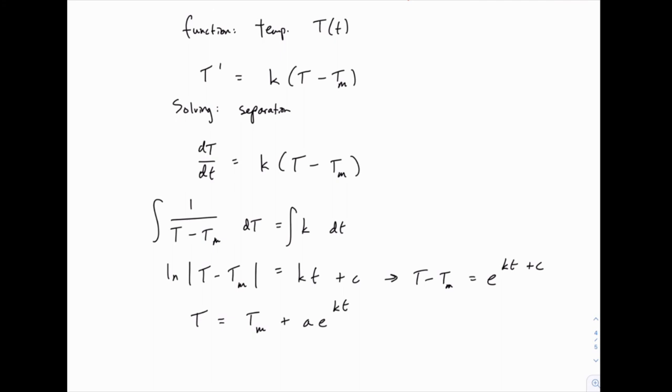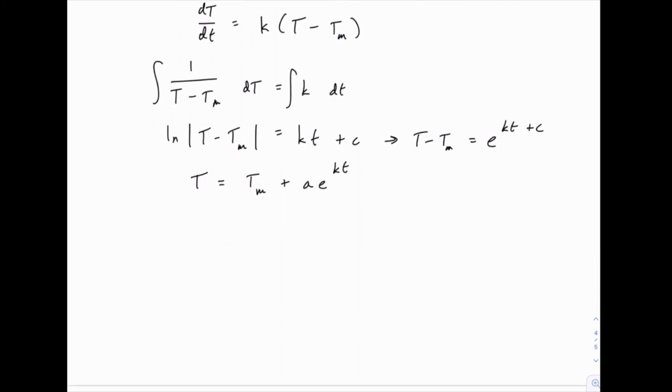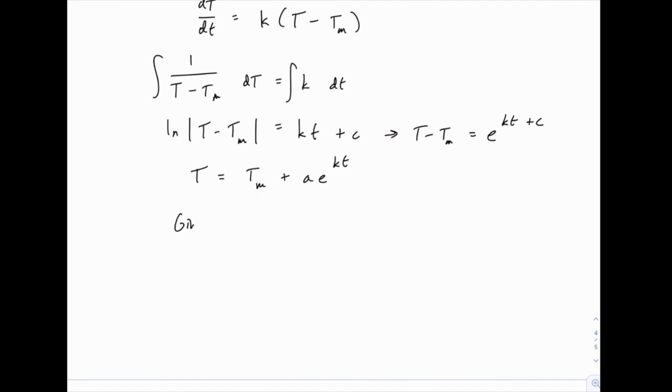Then we can actually solve for A if we're given an initial temperature. So if we're given an initial temperature T_0, whatever number that ends up being, then we can have T_0 equals T_M plus A e to the K times 0, and so with a little work we can figure out that A is T_0 minus T_M.